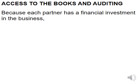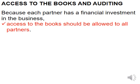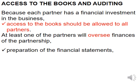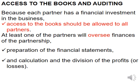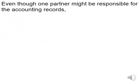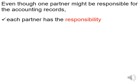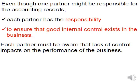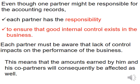Access to the books and auditing: because each partner has a financial investment in the business, access to the books should be allowed to all partners at all times. At least one partner will oversee the finances, ensuring financial statements are prepared and handling the calculation and division of profits or losses. Even though one partner may be responsible for accounting records, each partner has the responsibility to ensure that good internal control exists. Each partner must be aware that a lack of control impacts the performance of the business and therefore the amount earned by all partners.